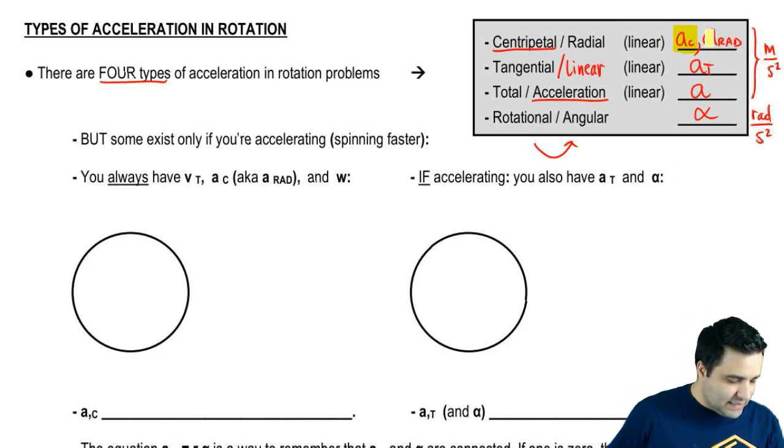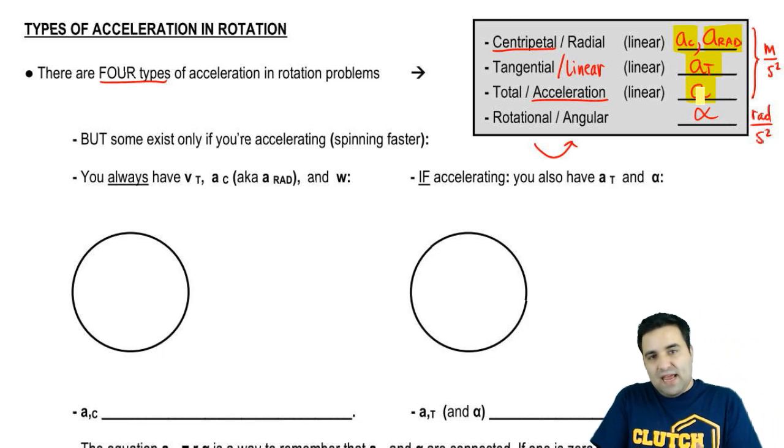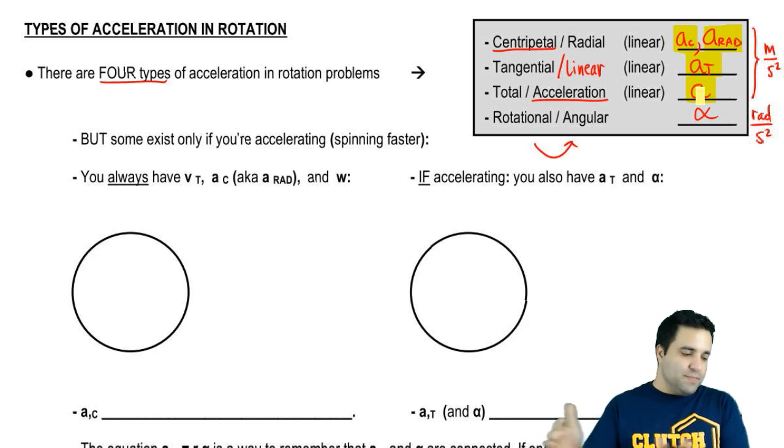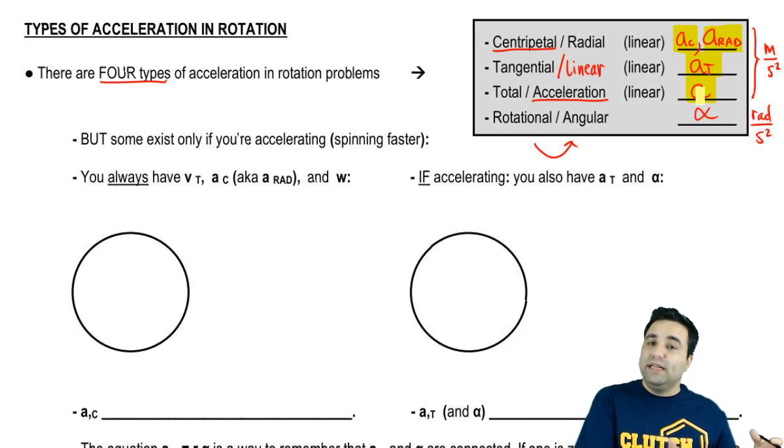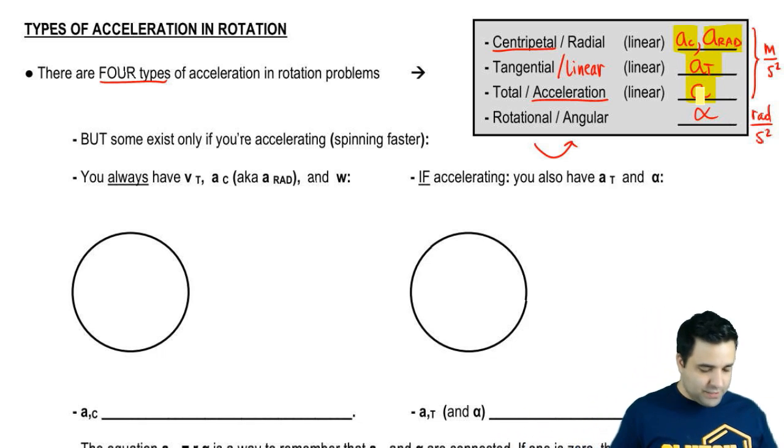If it's an A—AC, ARAD, AT, A—it's meters per second squared. It's an English letter, so it's meters per second. If it's alpha, it's a Greek letter, it's in radians per second. That's one way to think about it.